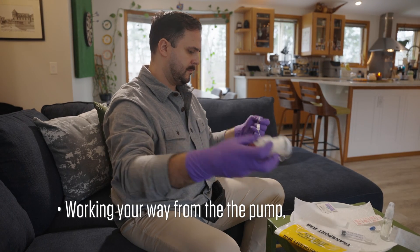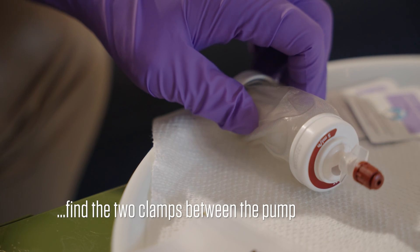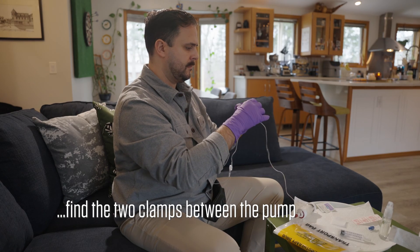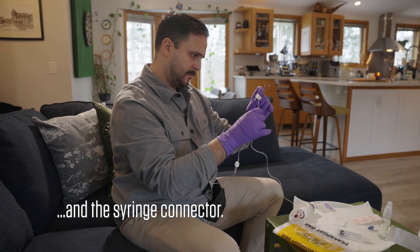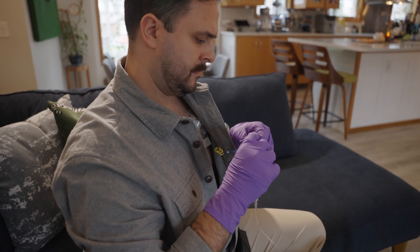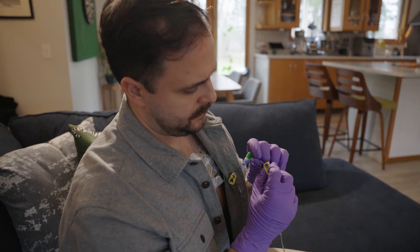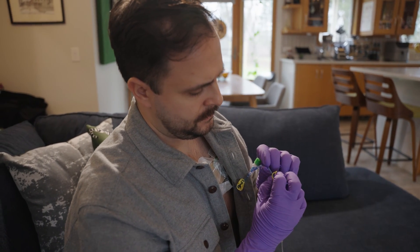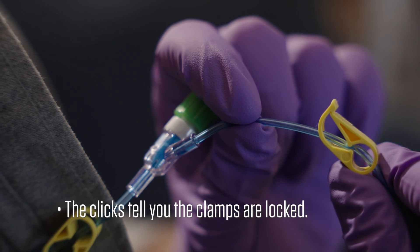Working your way from the pump, find the two clamps between the pump and the syringe connector. Pinch both clamps closed to lock them in place. The clicks tell you that the clamps are locked.